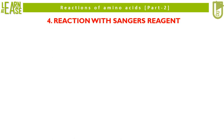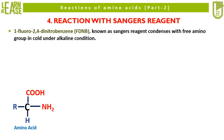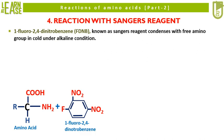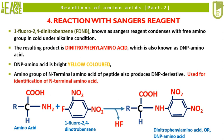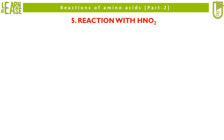Now I will explain the fourth reaction, that is reaction with Sanger's reagent. 1-fluoro-2,4-dinitrobenzene, abbreviated as FDNB, known as Sanger's reagent, condenses with free amino group in cold under alkaline condition. The resulting product is dinitrophenyl amino acid, also known as DNP amino acid. DNP amino acid is bright yellow colored, and this reaction is categorized as a color reaction of amino acid. The amino group of the N-terminal amino acid of a peptide also produces a DNP derivative, and so it is routinely used for identification of N-terminal amino acid.